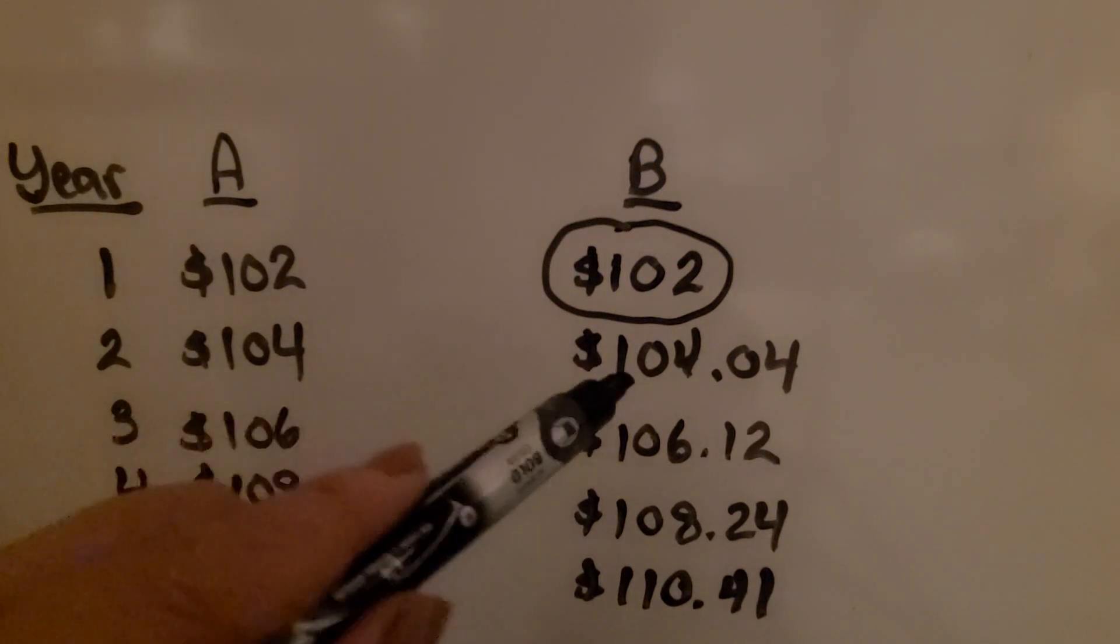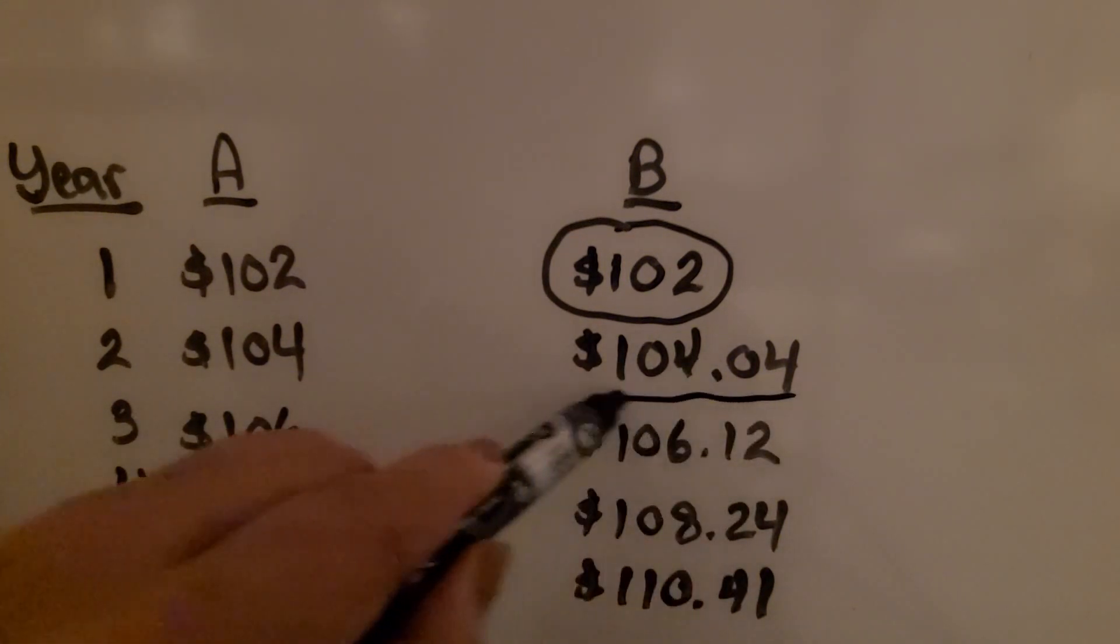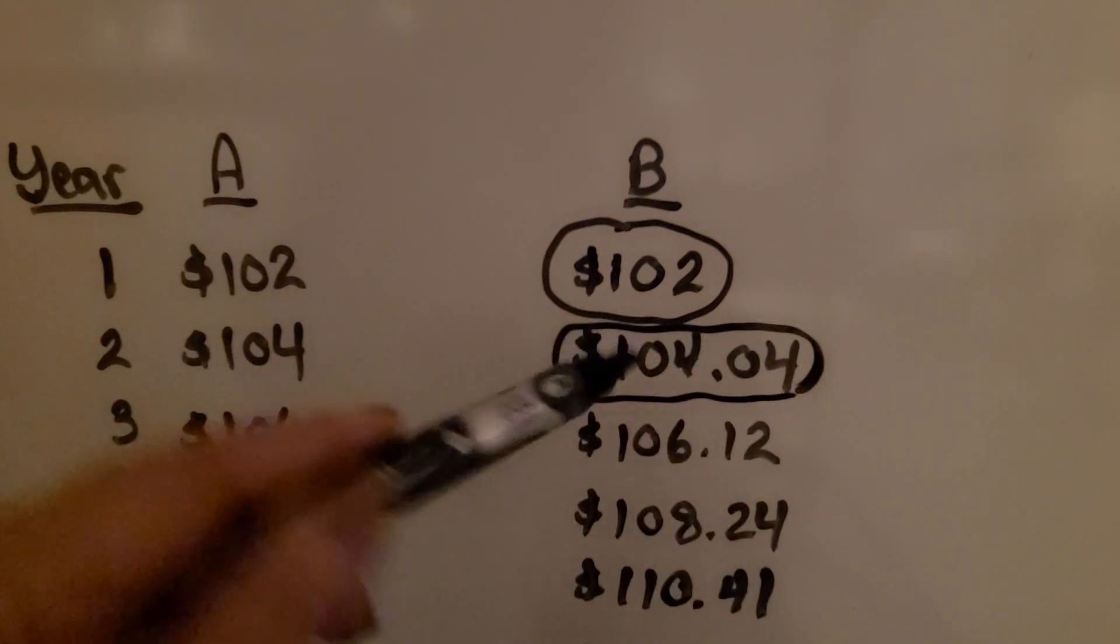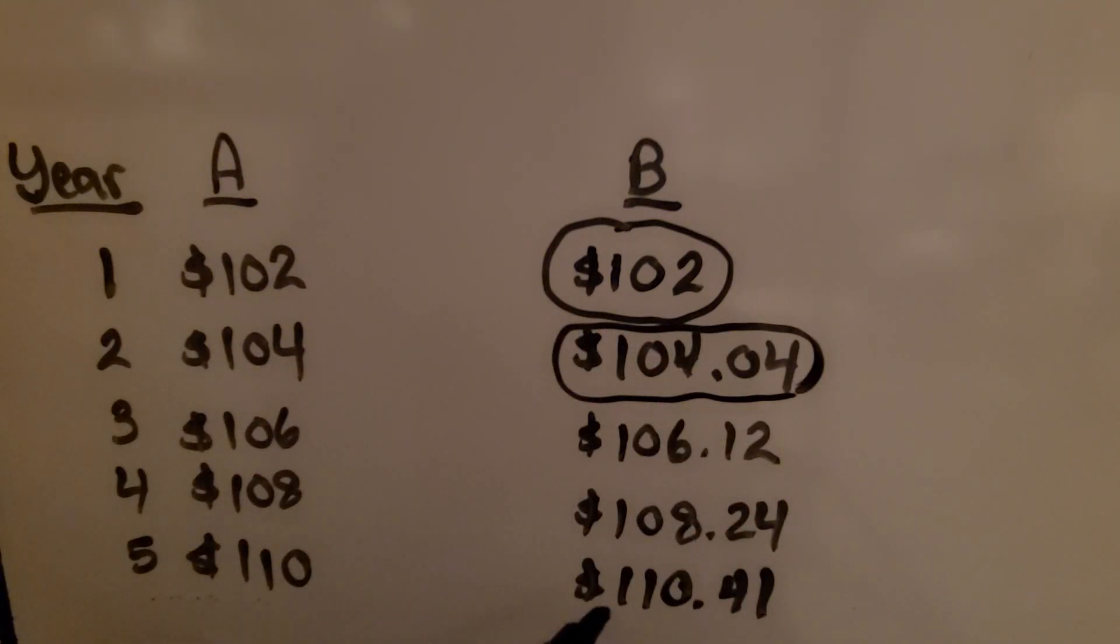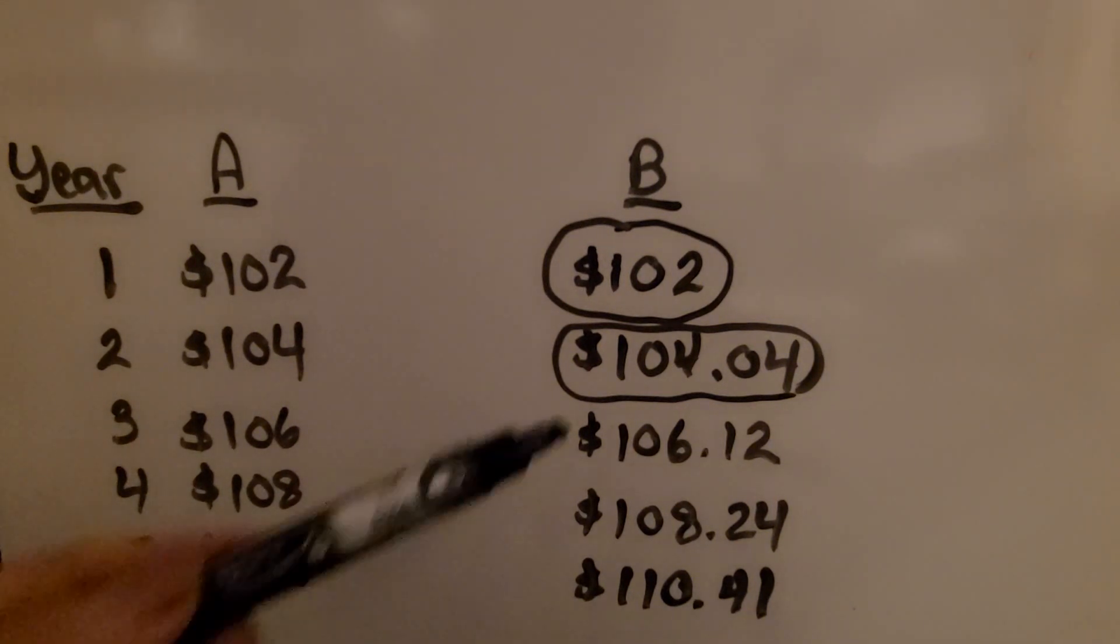So for the third year, we're going to do 2% of this amount. That's why when we get to the fifth year mark, the compounded interest has an extra $0.41 because it had a little bit more interest each year.